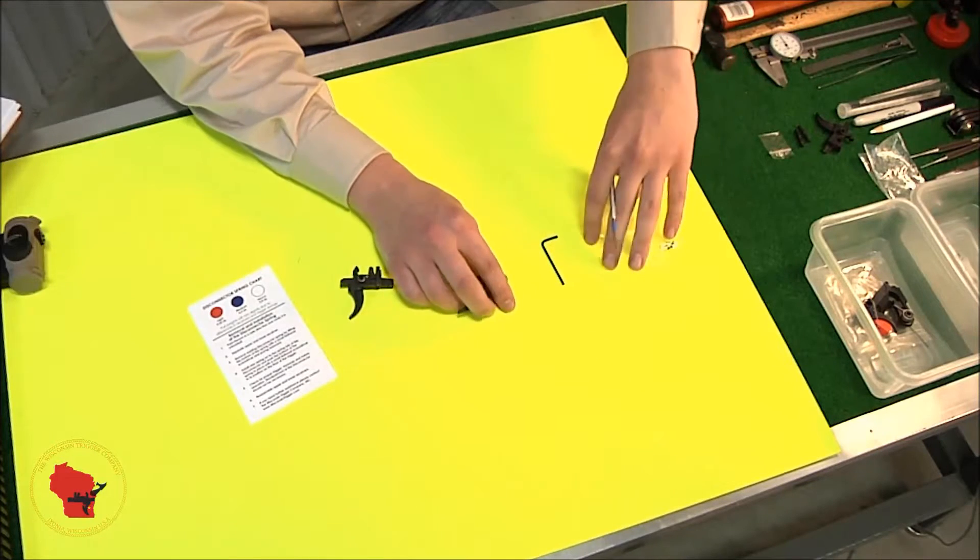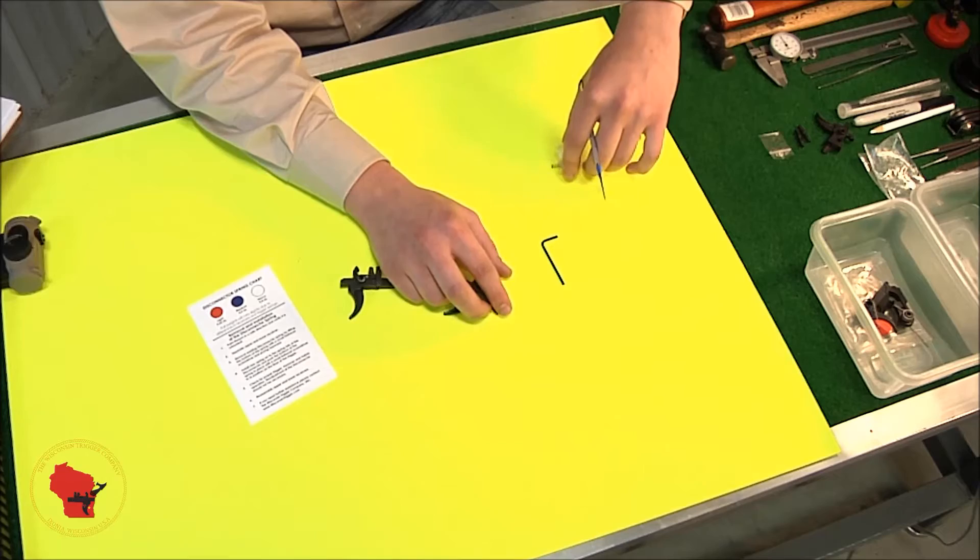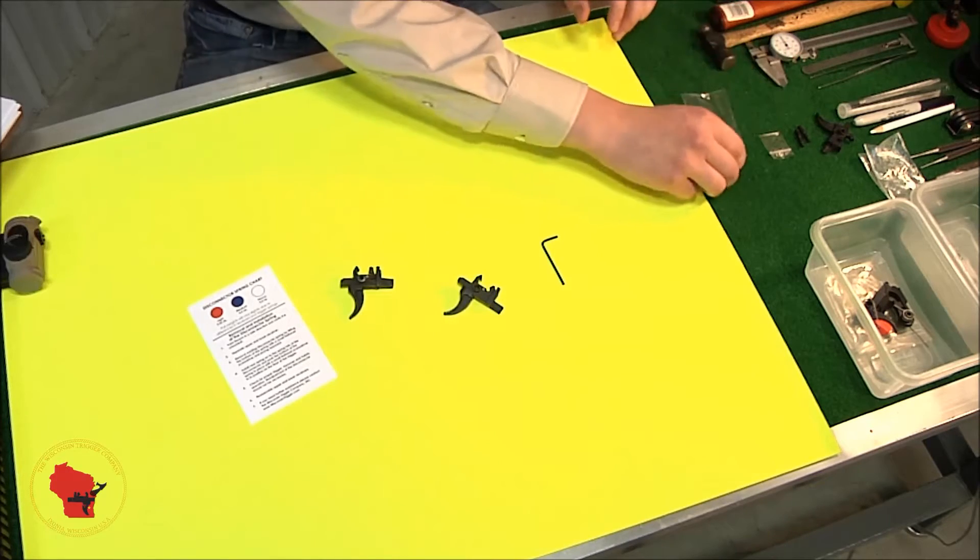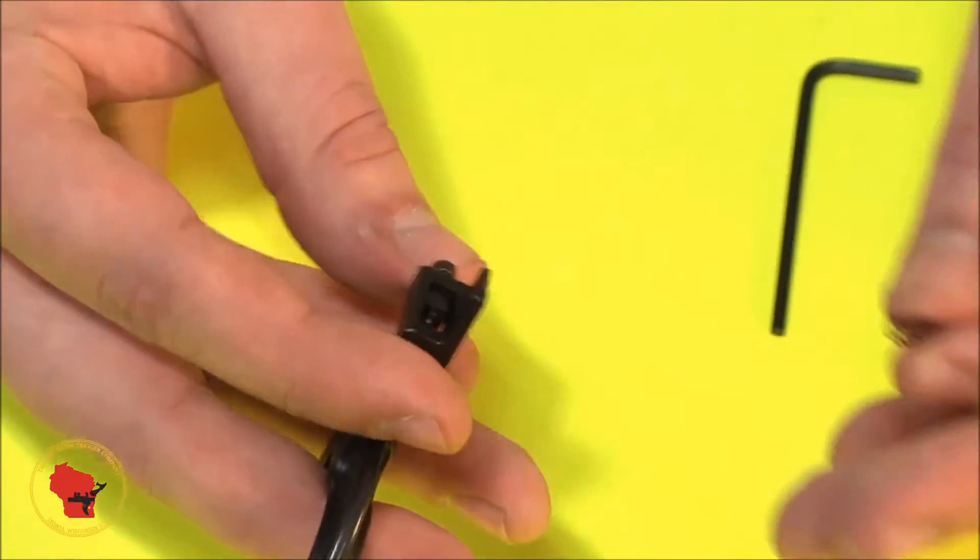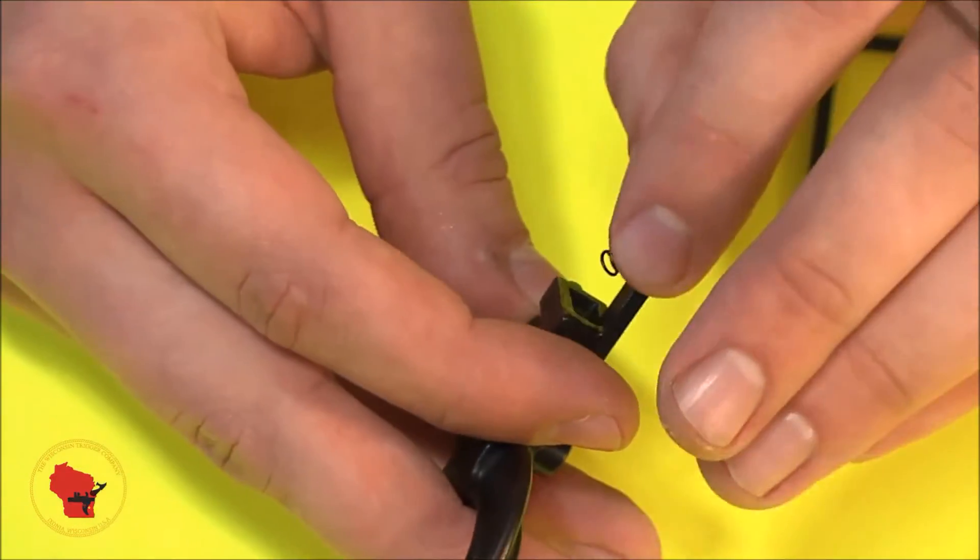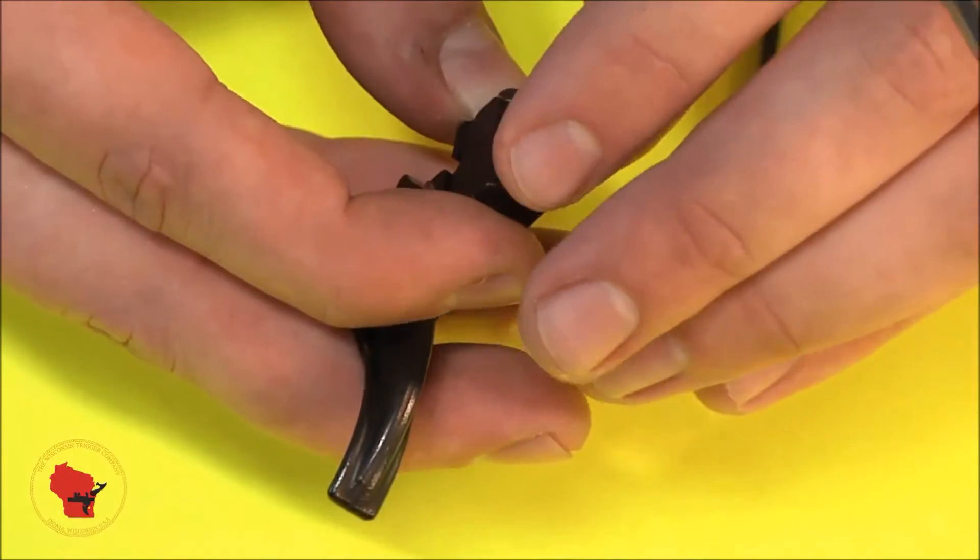Set it off to the side, and say you want to go ahead and put the red spring in there. Take the spring, slide the disconnector all the way forward, and there's a little tab on the bottom of it that you can slip the top of the spring over.